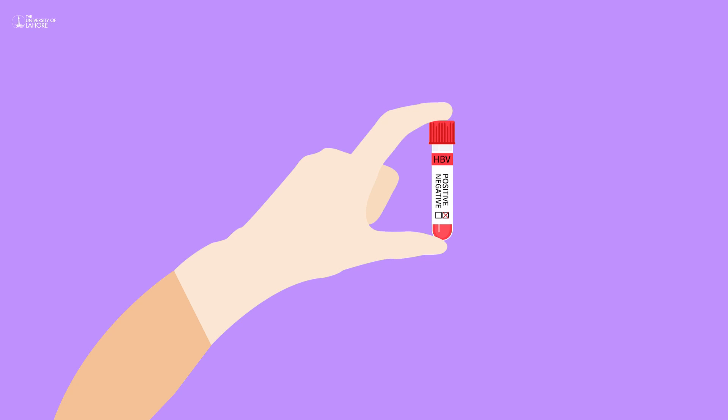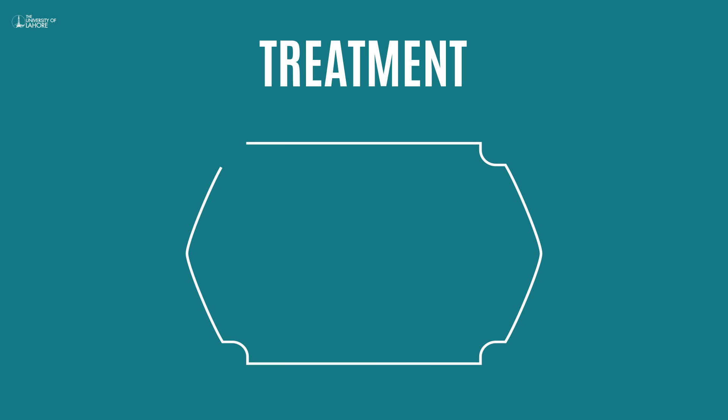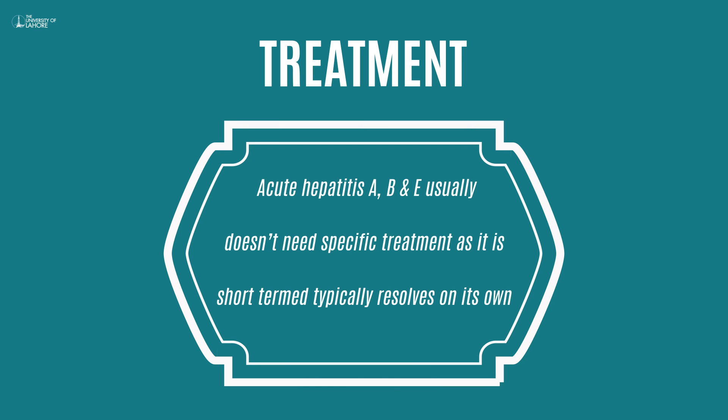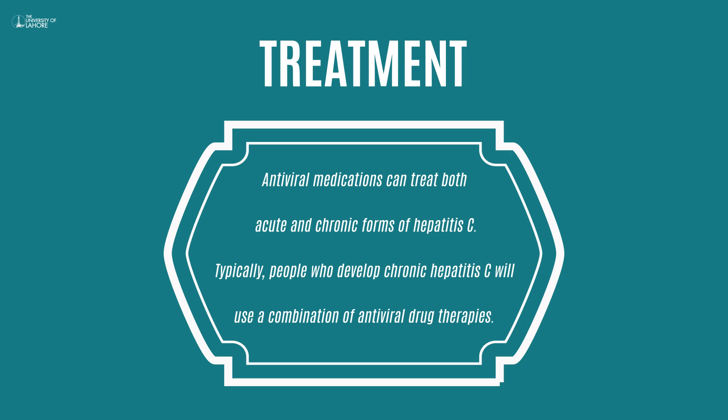Liver function tests can also be performed to see how well and efficiently your liver is working — blood samples are used in this test. Acute hepatitis A, B, and D usually do not need specific treatment as they are short-term and typically resolve on their own. Antiviral medications can treat both acute and chronic forms of hepatitis C. Typically, people who develop chronic hepatitis C will use a combination of antiviral drug therapies.